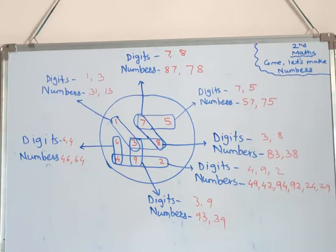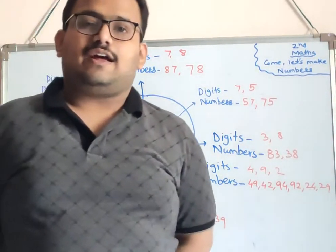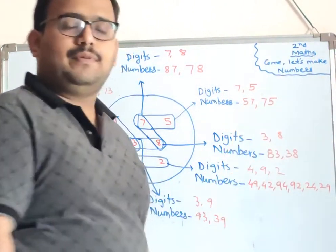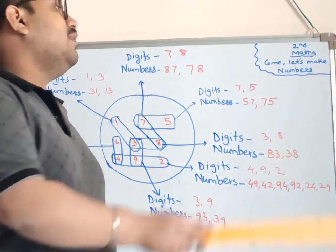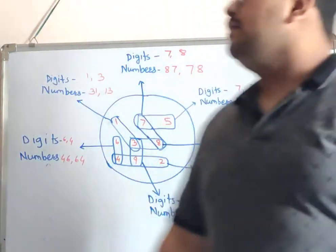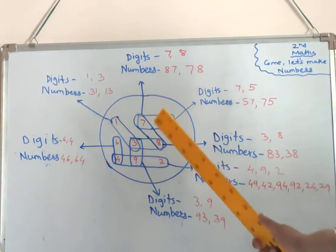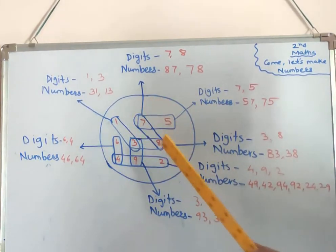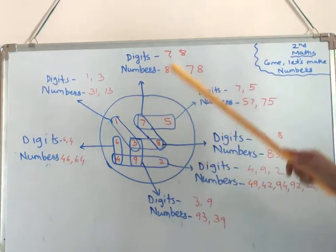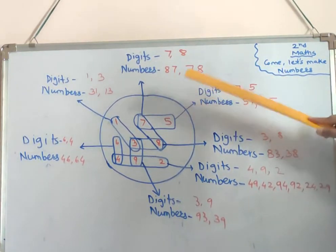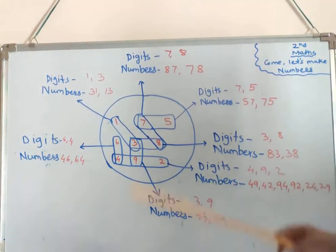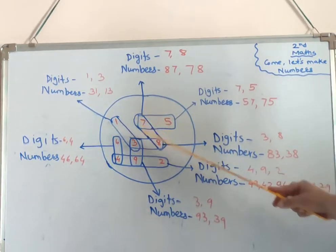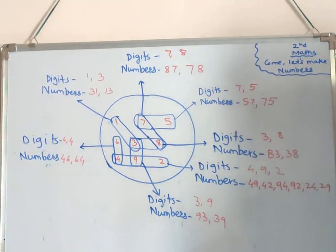Good morning children. We will start Standard 2 math — the chapter 'Let's Make Numbers.' There is a circle with some numbers given inside, and a rectangle drawn around it. We have to take the digits from it and make numbers. The first arrow shows two digits: seven and eight.